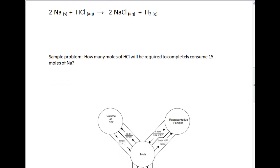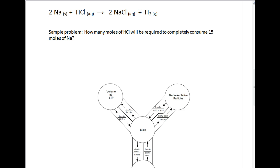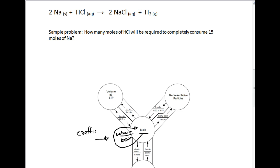We're going to use the same exact balanced equation. Again, using the mole road, I'll use that same roundabout — unknown over known — from the coefficients of the balanced equation. The problem says: how many moles of HCl will be required to completely consume 15 moles of sodium? These are both reactants. Using stoichiometry, we can go anywhere on the mole road: products to reactants, reactants to reactants, reactants to products, or products to products.